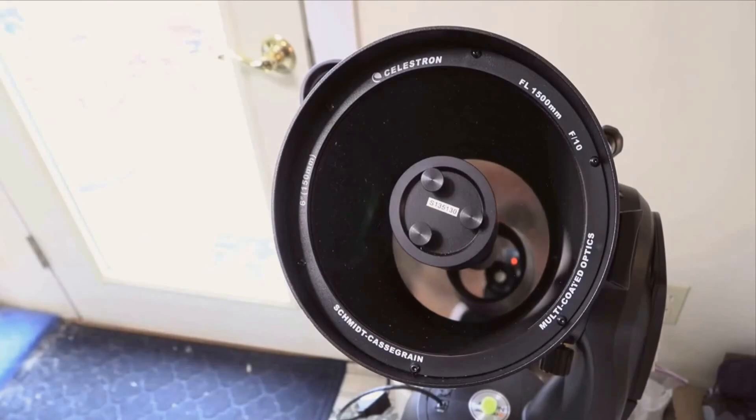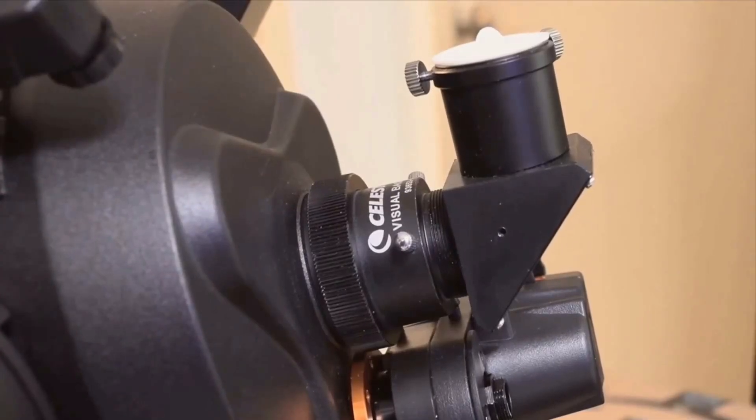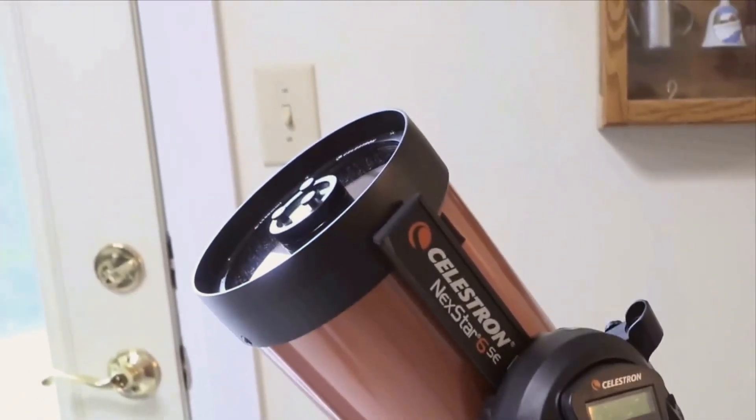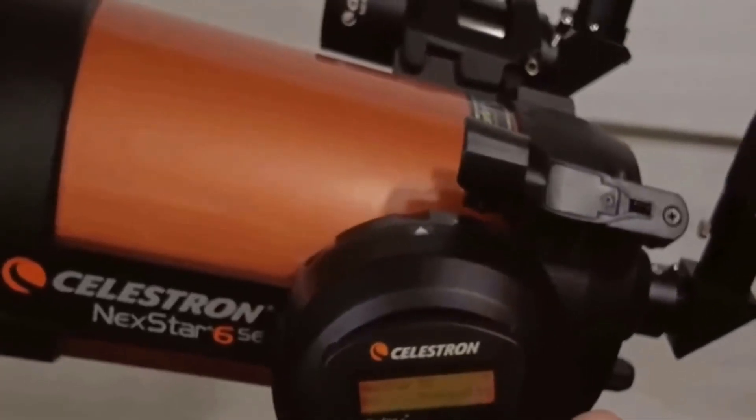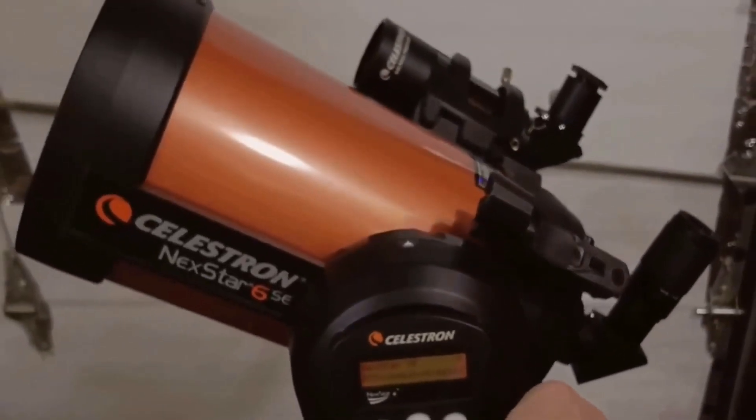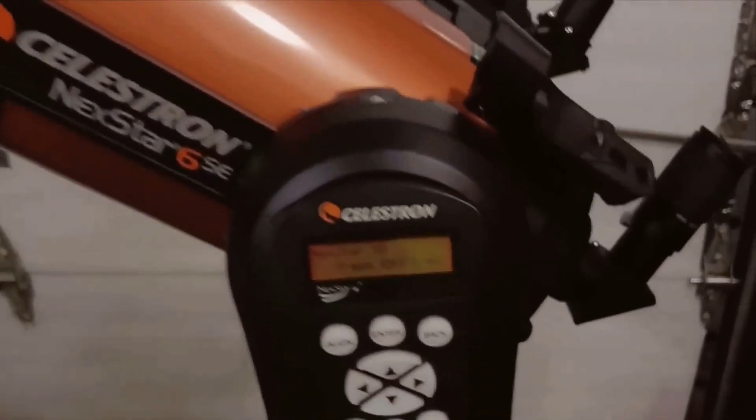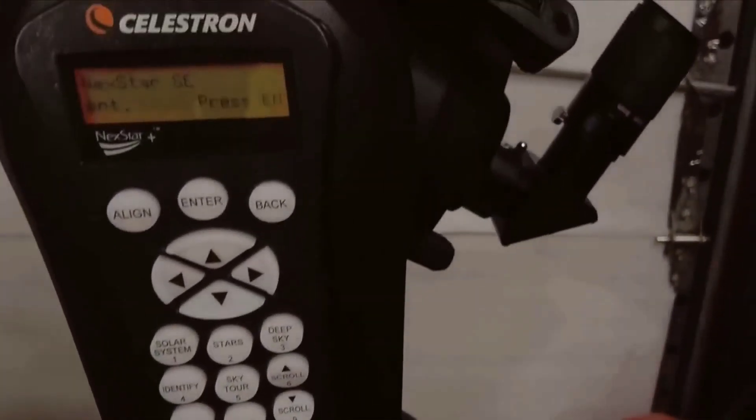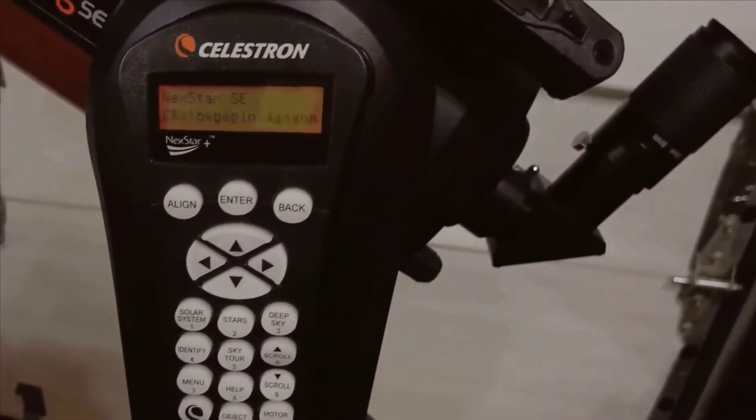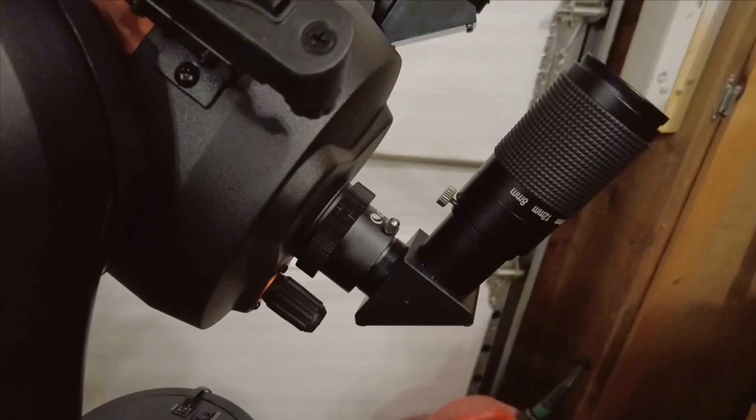Now let's talk about the database. The Nexstar 6SE boasts an extensive database of over 40,000 celestial objects. From stars to planets and various deep sky objects, there's a plethora of things to explore. For beginners who might not be familiar with the night sky, this database is an educational treasure. It allows you to learn more about our universe in a structured and engaging way. The go-to mount makes it simple to locate and track these objects, guiding you through the sky and piquing your curiosity as you go.